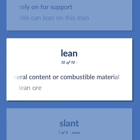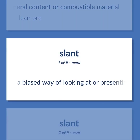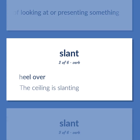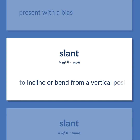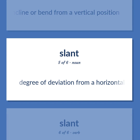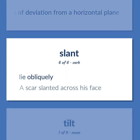Lacking in mineral content or combustible material. SLANT: A biased way of looking at or presenting something. Heel over — the ceiling is slanting. Present with a bias. To incline or bend from a vertical position. Degree of deviation from a horizontal plane. Lie obliquely — a scar slanted across his face.